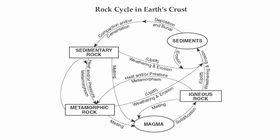The last rock type is sedimentary. Sedimentary rocks can become themselves: they can be uplifted, weathered, or eroded back into sediments. Those sediments can be further eroded into smaller sediments, then deposited, buried, compacted, and cemented back into sedimentary rock.